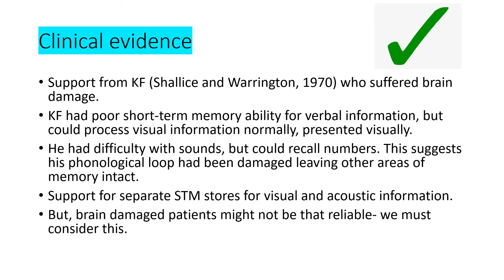Now for evaluation. We have clinical evidence - support from KF, studied by Shallice and Warrington in 1970, who suffered brain damage in a motorcycle accident. KF had poor short-term memory for verbal information but could process visual information normally when presented visually. He had difficulty with sounds but could recall numbers. This suggests his phonological loop was damaged while leaving other areas of memory intact, supporting the idea of separate short-term memory stores for visual and acoustic information. However, brain damage patients are not that reliable as they are a single case.